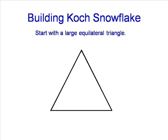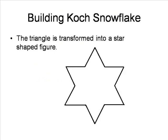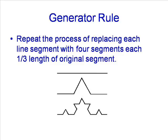Begin with a line. The middle third of the segment is removed to build a segment which has four sides, two triangular in the middle. The process repeats, and a star is generated.